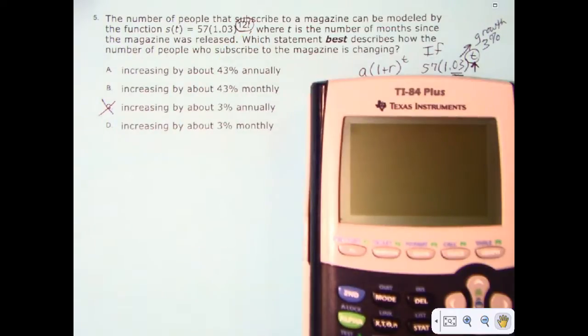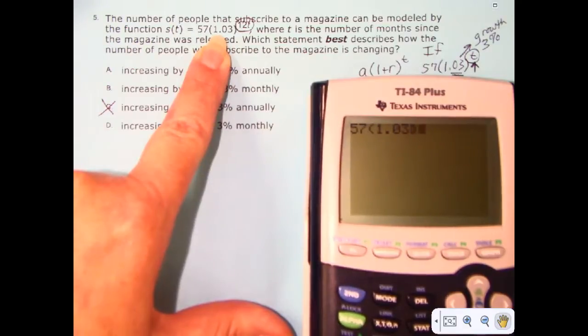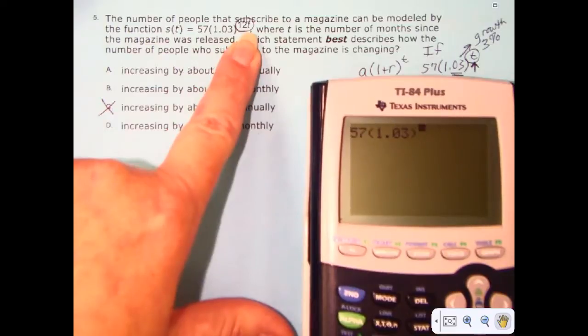Now this is really complicated because you have to analyze the whole thing and understand what's happening. After one month, we started with 57 people that had subscribed to this magazine. And after one month, if we substitute one for T, we just put it straight in the calculator, just like we see it here. At the end of the first month, we should have 81, about 81 people subscribed to this magazine.